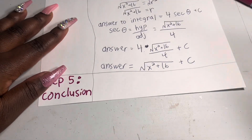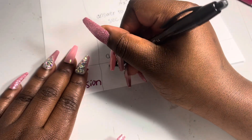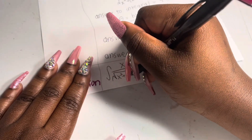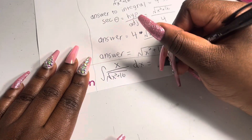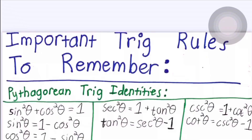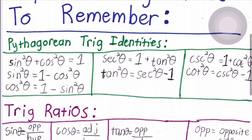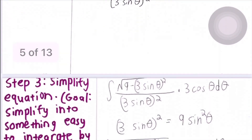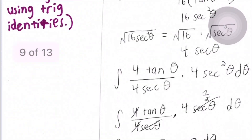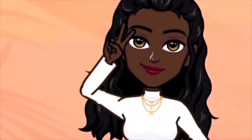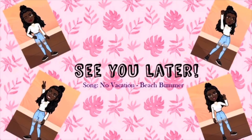In conclusion, the integral of x/√(x²+16) dx = √(x²+16) + C. All the notes from this video and these examples have been uploaded to the Google Drive link in the description below. I also have a third example using secant theta substitution available there as well. That pretty much sums up this topic — see you guys in the next video!